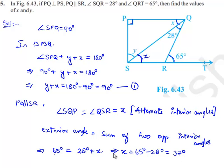Substituting the value of X in equation 1, we get Y plus 37 degrees equals 90 degrees, which implies Y equals 90 minus 37, which equals 43 degrees.